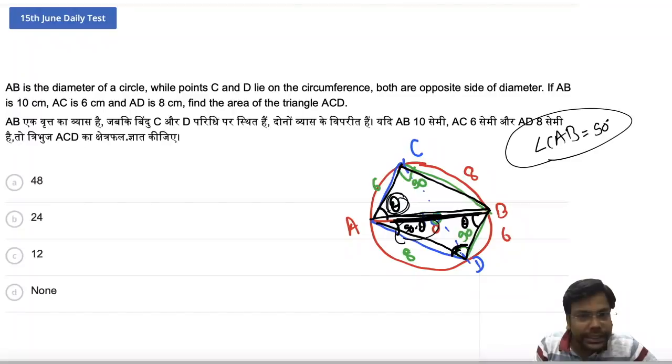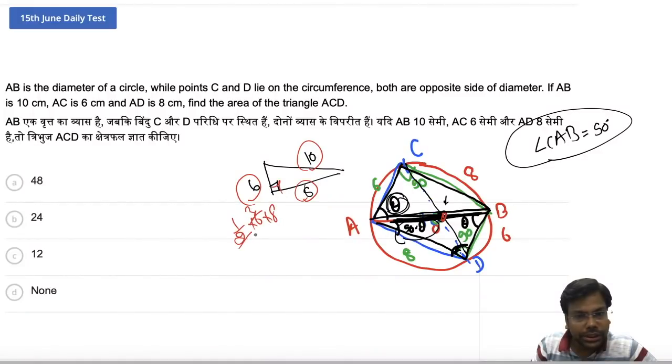We need to find the area of ACD. In ACD, the figure is very simple. It is 6, 8, 10. Because it is a right angle triangle. So we can say AD is also the diameter and this point is the center. We need to find the area of 6, 8, 10 with 90 degrees. Area is half into 6 into 8. That is 24 is the area of this triangle.